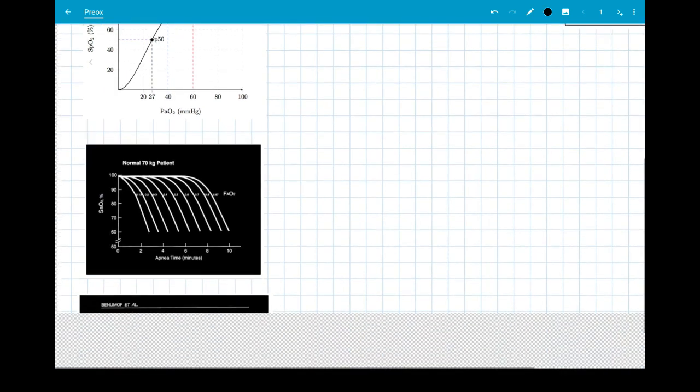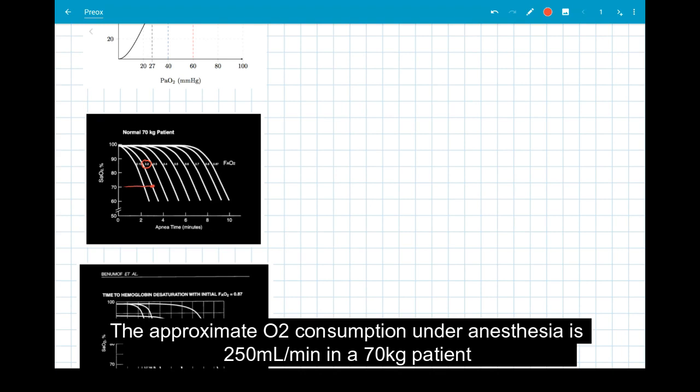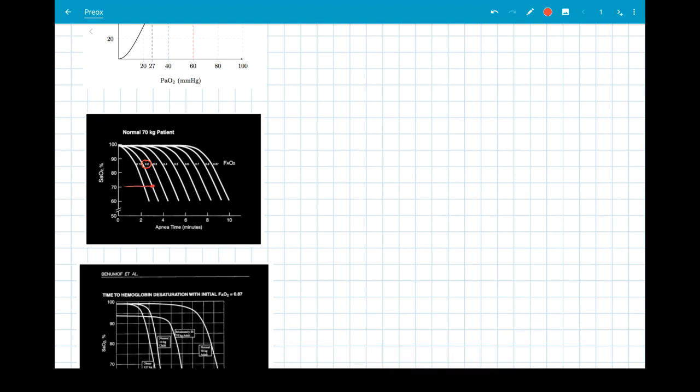The next diagram shows the FaO2, or the fraction of alveolar O2, compared to the oxygen saturation throughout time. In time being apnea time, so in a normal 70-kilogram patient with 21% FaO2, once they become apneic, their oxygen saturation will fall to 70% in less than 4 minutes due to what we discussed earlier with the O2 saturation curve.